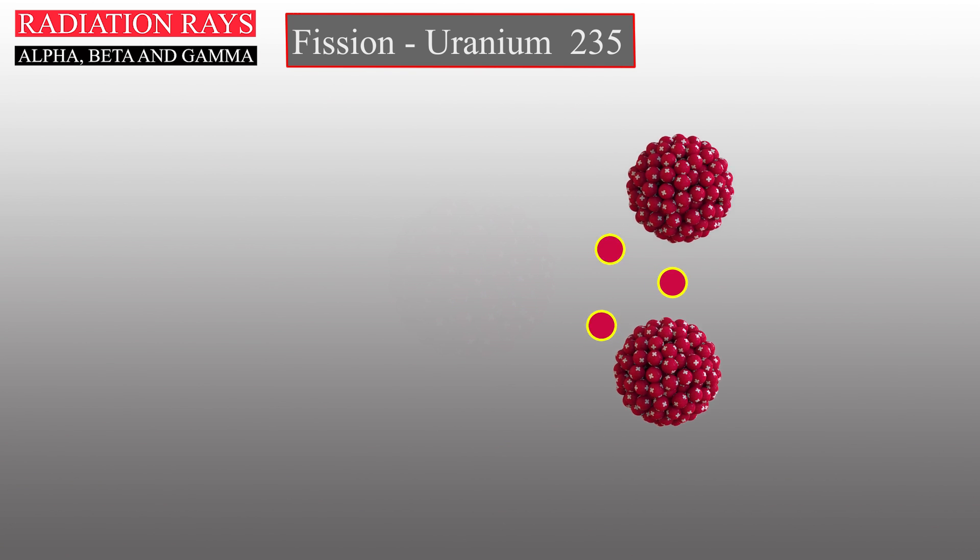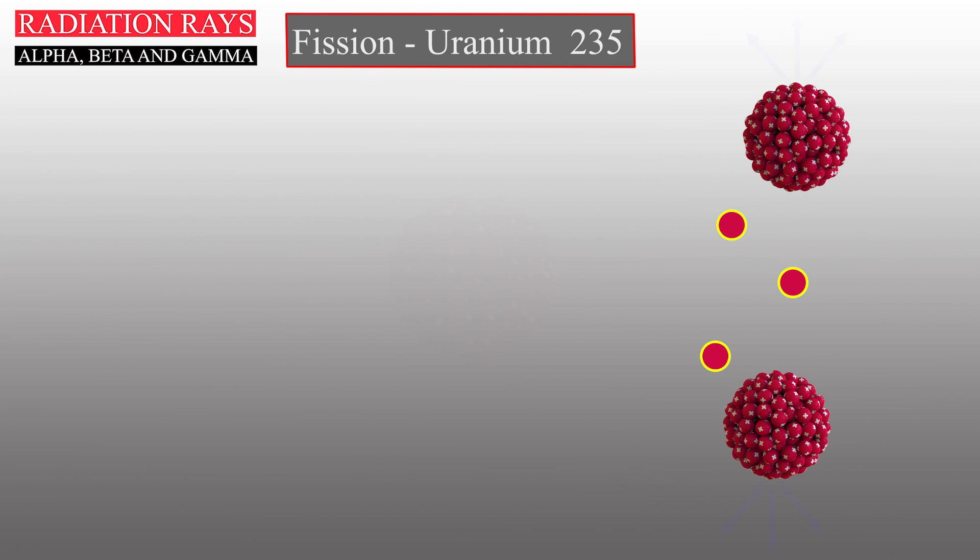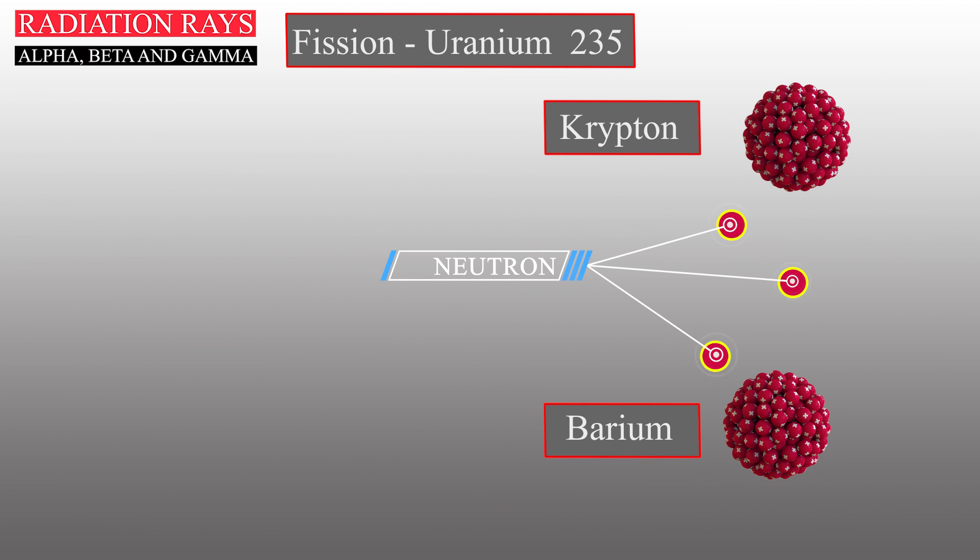This elongated shape upsets the balance in favor of repulsive forces, causing the uranium-235 atom to split into fragments of krypton and barium. Three neutrons are also generated from this powerful release of energy.